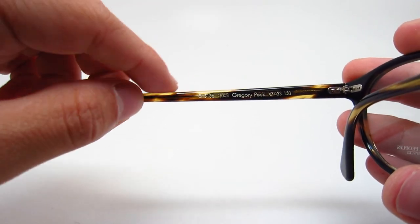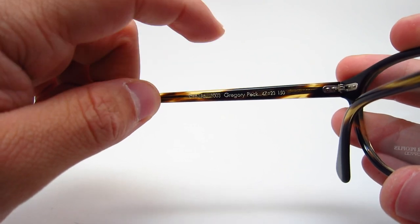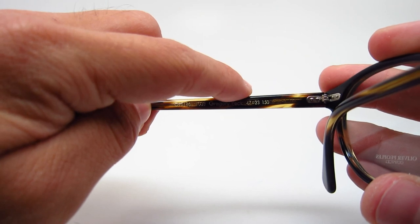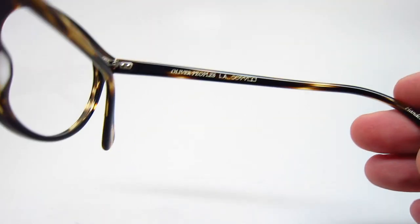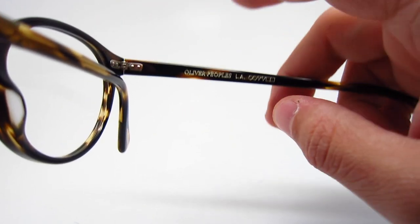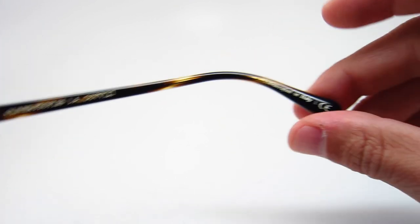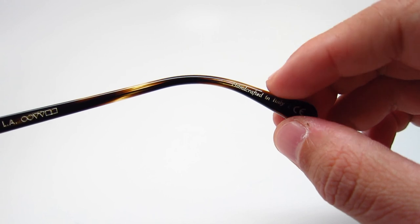Let me show you the inside. It will have an imprint of the model OV5186, the color code 1003. It will say Gregory Peck. This one has the size info: 47, 23, 150. And on the other side it will have the Oliver Peoples LA, the Oliver Peoples logo. Also on the temple ends it will say handcrafted in Italy.